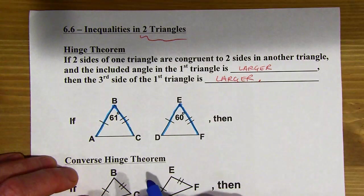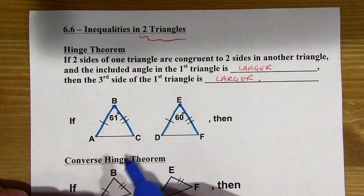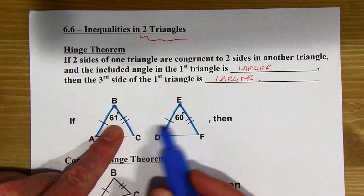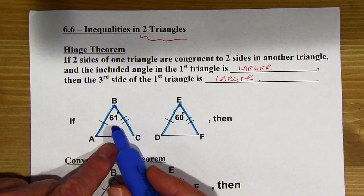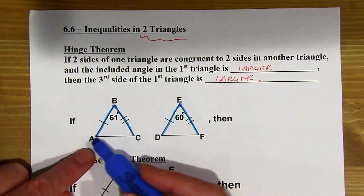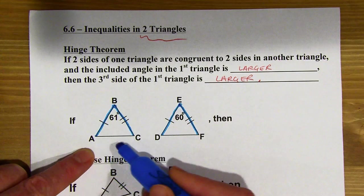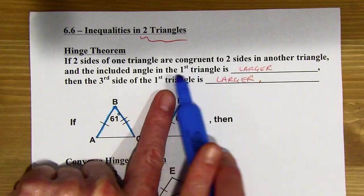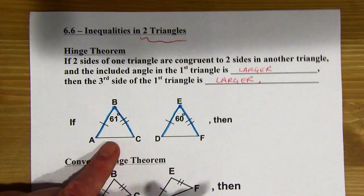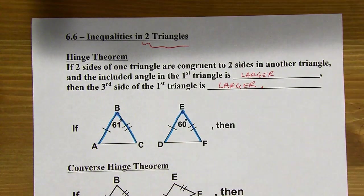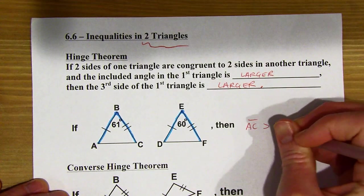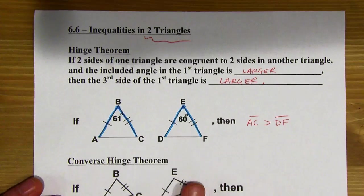And all the hinge theorem says that we can tell which door is open wider. Well, since this is 61 degrees, and that's just 60 degrees, that means that this one is open wider. So since this one is open wider, that means segment AC is going to be longer than DEF because this is closed more, and it's the same door. So that means this one's larger than that one. So I can say AC is going to be greater than DEF. That is the hinge theorem.